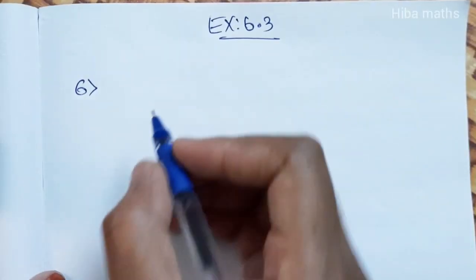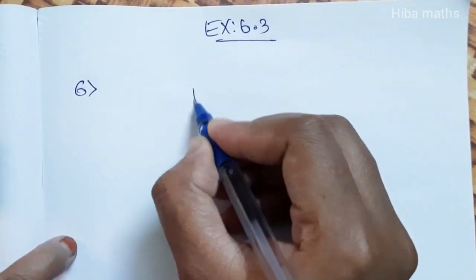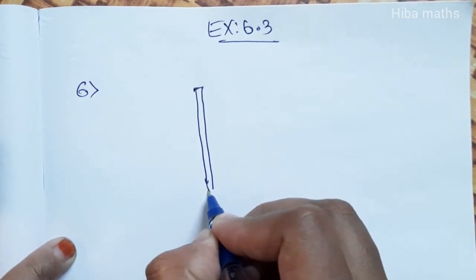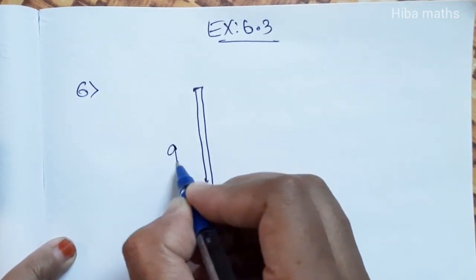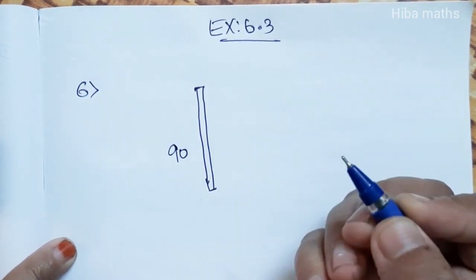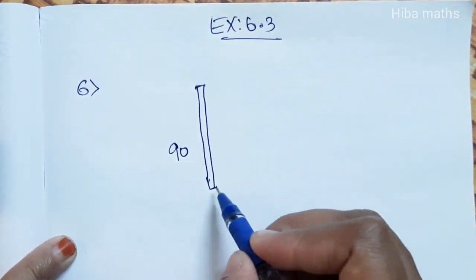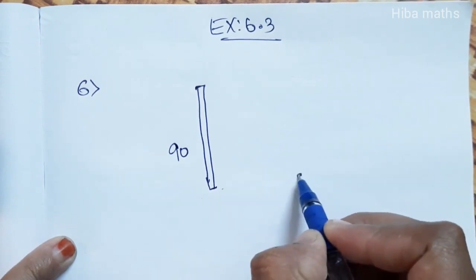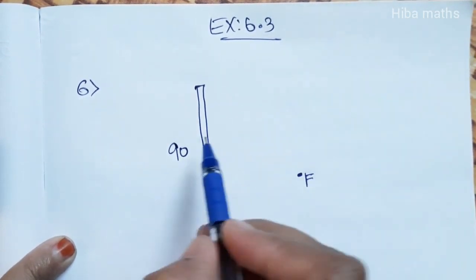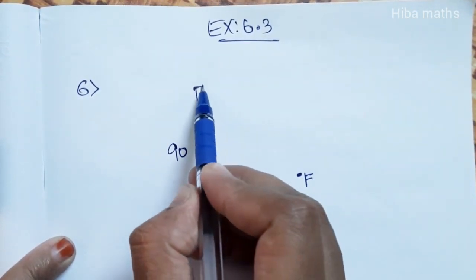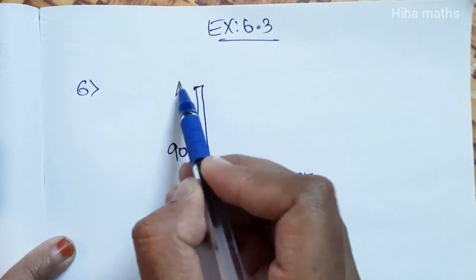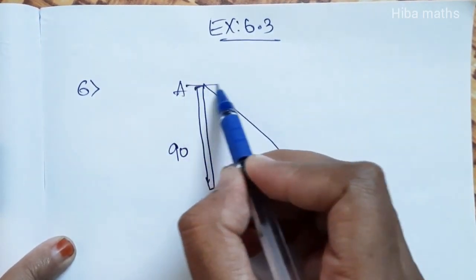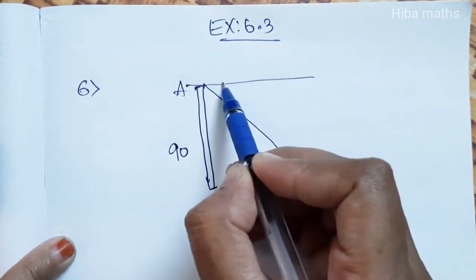If you look at the diagram of a lift, the building is 90 feet tall. There is a fountain in the garden. At the top of the building, the angle of depression to the fountain is 60 degrees.